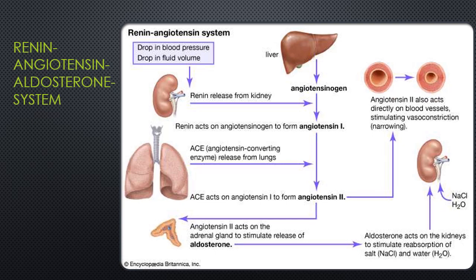The RAS system is activated when the kidneys sense a drop in blood pressure or fluid volume. They release renin into the bloodstream, which converts angiotensinogen into angiotensin 1. That circulates to the lungs where angiotensin-converting enzyme, or ACE, turns it into angiotensin 2. Angiotensin 2 stimulates the adrenal gland to release aldosterone, which acts on the kidneys to reabsorb sodium and water and release potassium, and also works on the blood vessels causing sympathetic alpha stimulation or vasoconstriction.